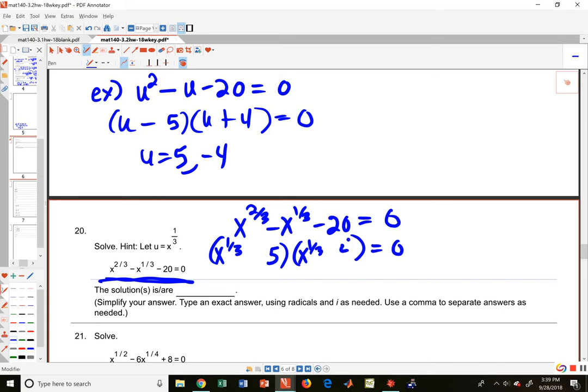You do the same thing with 20 that we did in the previous example. You do a five, you do a four. Now a positive four x to the one-third and a negative five x to the one-third will give you a negative x to the one-third. So you got positive negative—we have it. So x to the one-third is equal to five, or x to the one-third equals negative four.